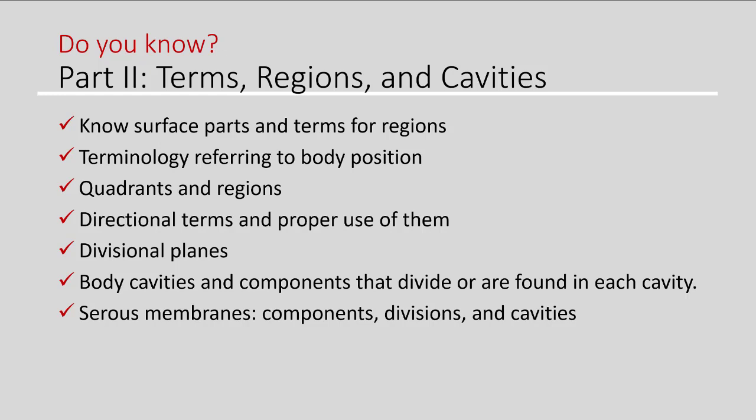By now you should be familiar with the surface parts and terms for each of the region terminology, referring to body position whether supine, prone, or anatomical position. You should know the quadrants, the four quadrants, as well as the nine regions. You should know directional terms and the proper use of them—if you were to say superior versus inferior, you're not just saying something is superior, it's always in relationship to something else. The forehead is superior to the nose. Then you should know about the three divisional planes: transverse, frontal or also known as coronal, and sagittal. You should know about the various body cavities and their subdivisions, as well as the layers that make up the serous membranes.